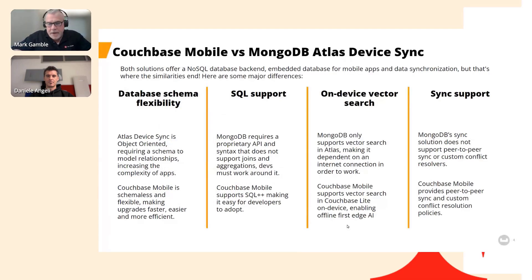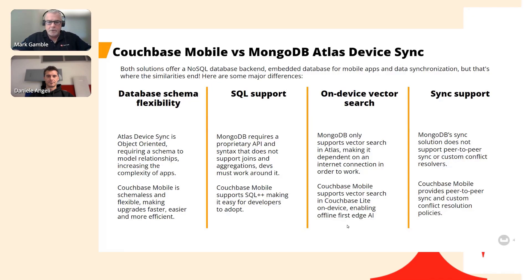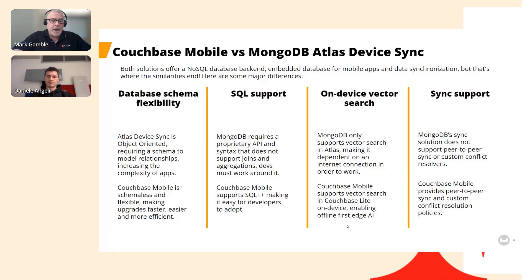Let's go over some similarities and differences between our mobile support and MongoDB's. Both solutions offer a NoSQL database backend, embedded persistence for mobile apps, and data synchronization. But that's where the similarities end. On database schema flexibility, Atlas Device Sync is object-oriented, which requires a schema to model relationships and increases application complexity. Couchbase Mobile is schema-less — a classic JSON document database. Adding new fields and indexes doesn't disrupt any rigid schema, making upgrades faster, easier, and more efficient.